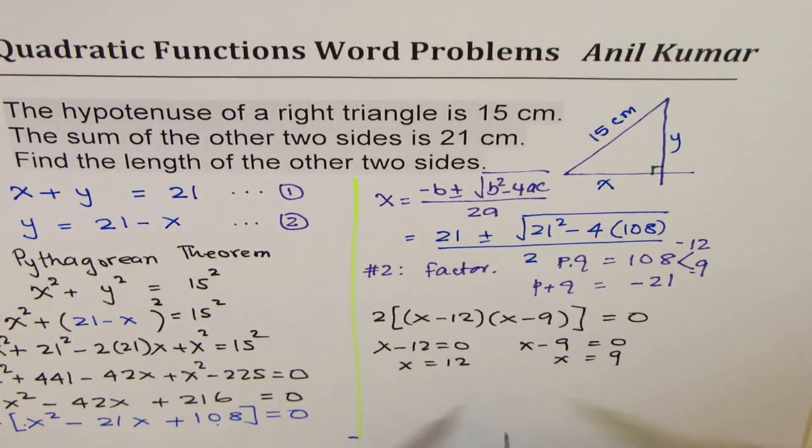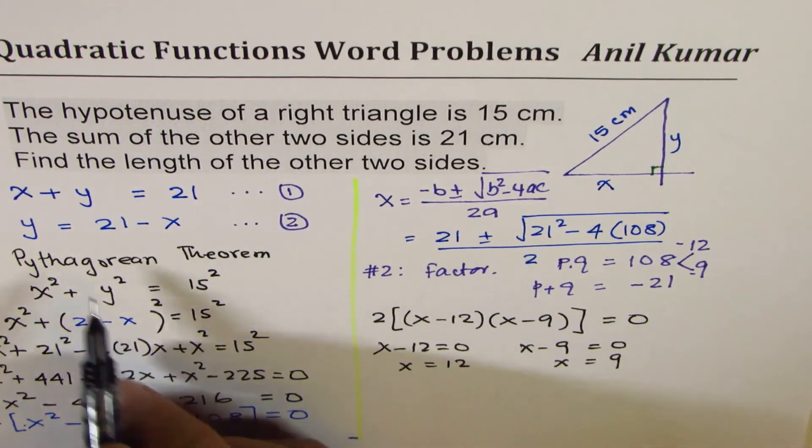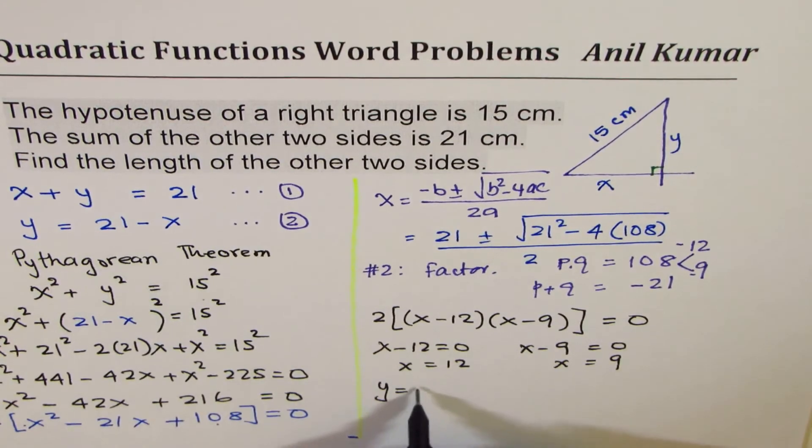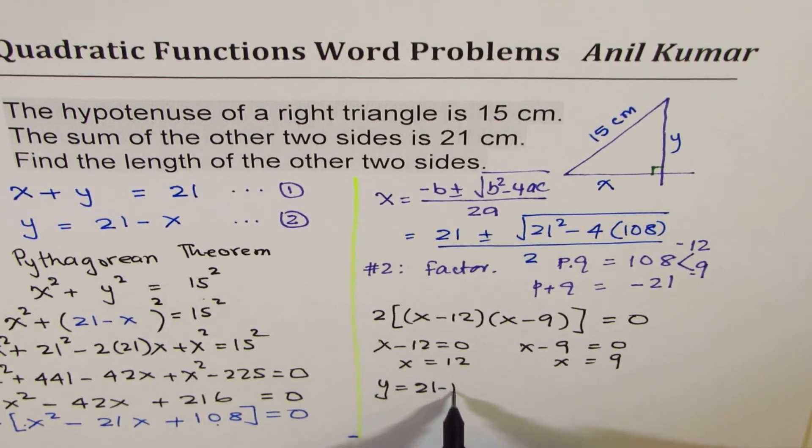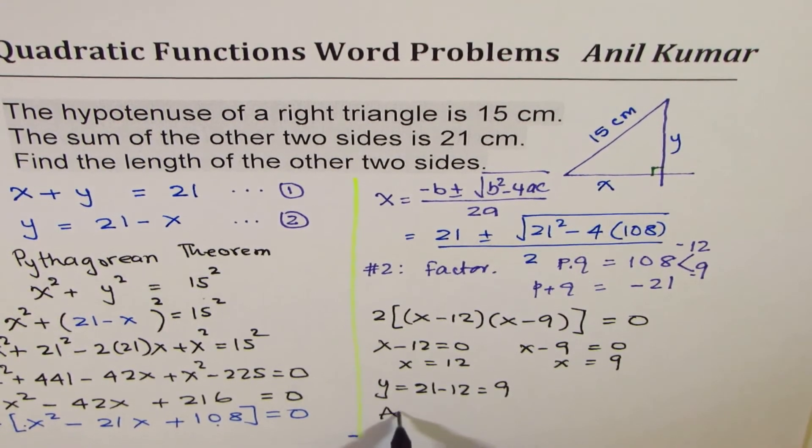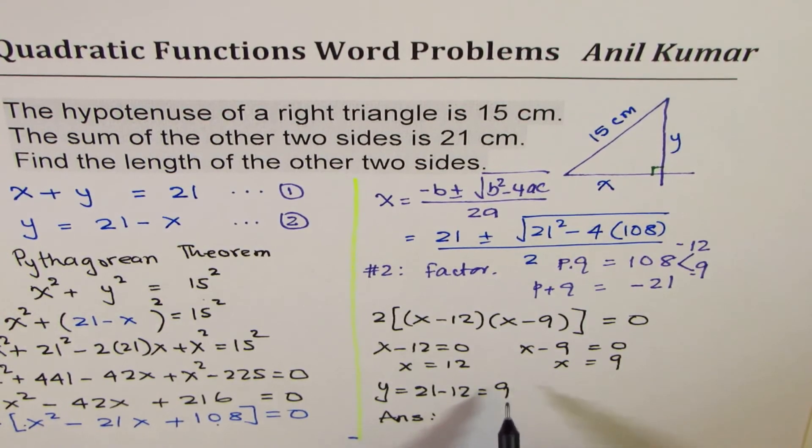So these are the two solutions for x. Now let's find what y is. y is 21 - x. So if I write 21 - x, which is 12, I get 9. So effectively, these are the two numbers.